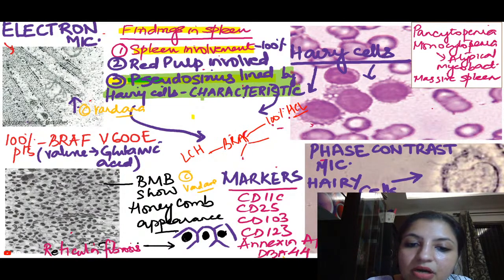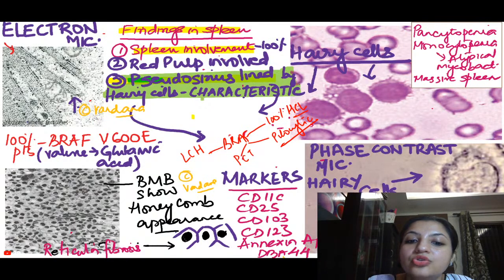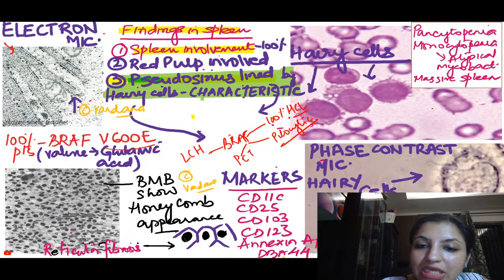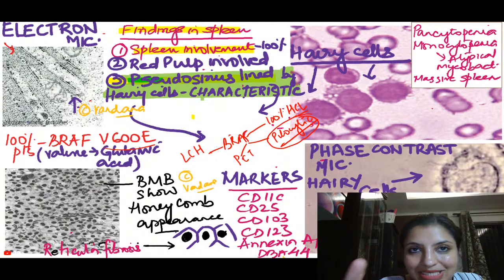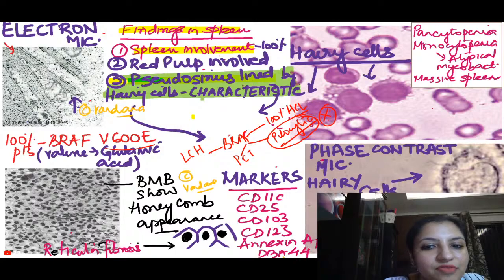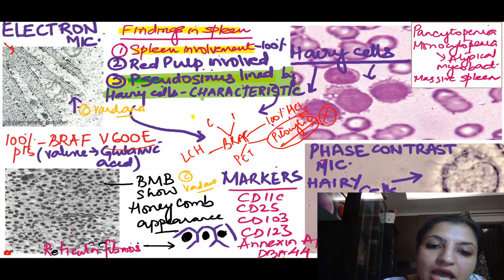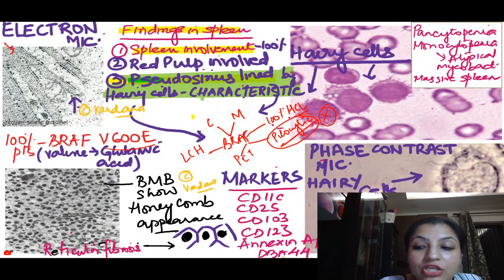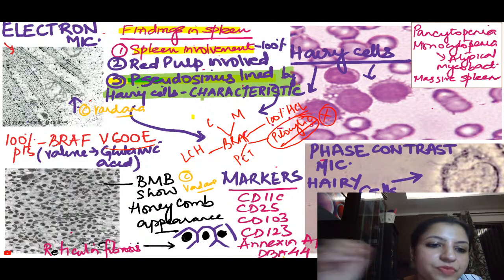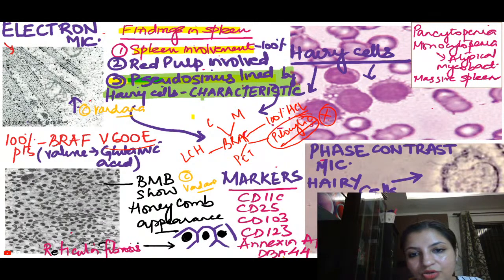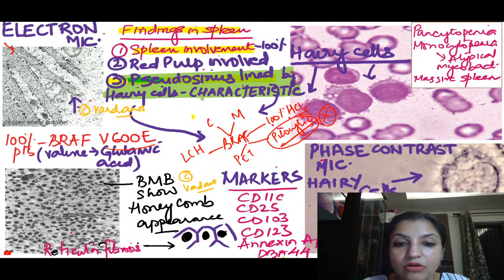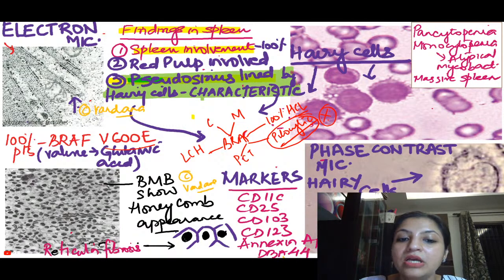Apart from LCH, remember papillary carcinoma of thyroid and pilocytic astrocytoma. The most common mutation in BRAF normally is V600E. In pilocytic astrocytoma, the mutation is in BRAF but it is a different point mutation — that's an important update. Also, colon cancer and melanoma have BRAF mutations. So remember six cancers: 100% of hairy cell leukemia has BRAF V600E where valine is replaced by glutamic acid, plus LCH, papillary thyroid carcinoma, pilocytic astrocytoma, colon cancer, and melanoma.